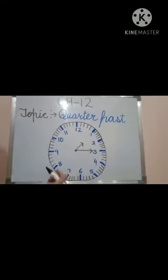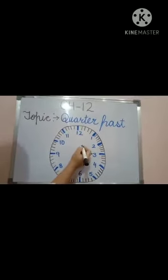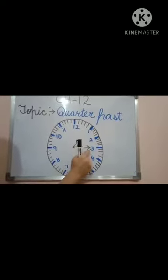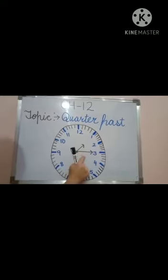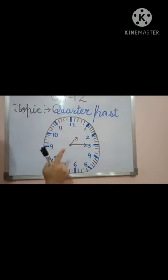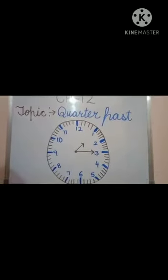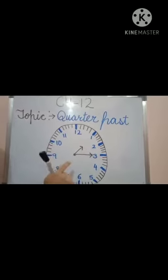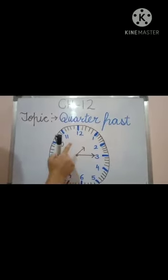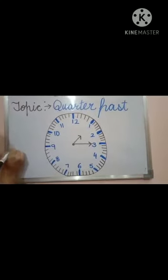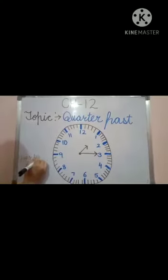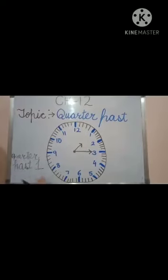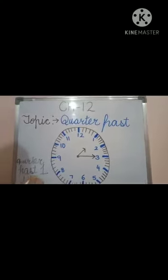See the clock. In this clock, the short hand is a little away from one and the long hand is at three. When the long hand is at three, that's our first quarter. That means a quarter has passed after one o'clock. So we can write 'quarter past one,' or we can also write 1:15.